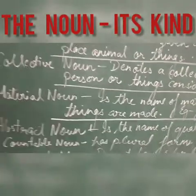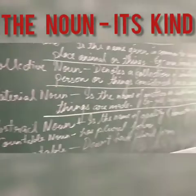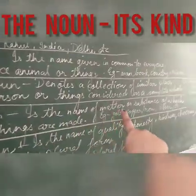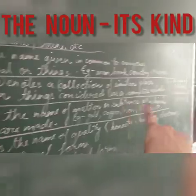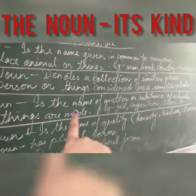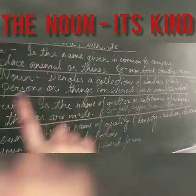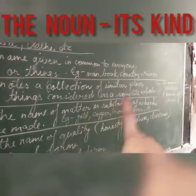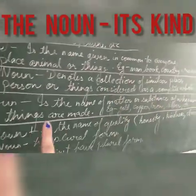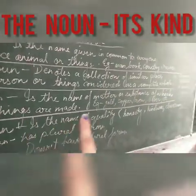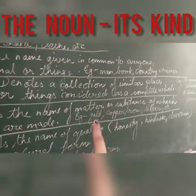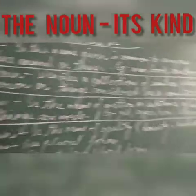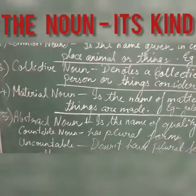Come to the material noun. What is material noun? Material noun is the name of matter or substance of which things are made. Material noun woh noun hote hai jis se matter or substance ko mila ke ek particular thing banti hai. For example, gold, copper, iron, silver, etc. These are the examples of material noun.